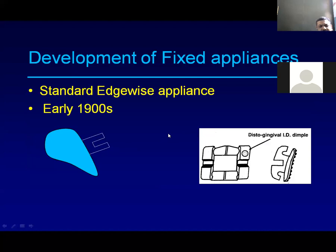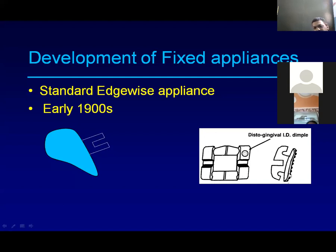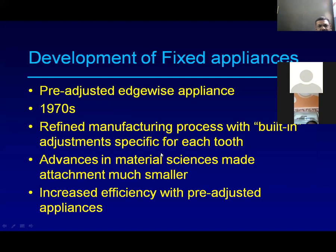Initially it was called the ribbon arch or pin and tube appliance, but there were certain drawbacks — putting up a band on every tooth was a difficult task. So the modification that came was a simple bracket, called the standard edgewise appliance, developed in the early 1900s. This bracket has a slot, wings to tie, and notches on the base to retain the bracket on the tooth surface.